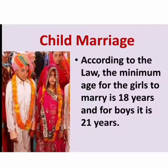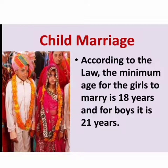Students, have you ever heard about child marriage? What is child marriage? The Government of India has decided the age for marriage. According to the law, the minimum age for girls to marry is 18 years, and for boys it is 21 years. Before that age, if anybody gets married, it is called child marriage. Children, child marriage is against the law.